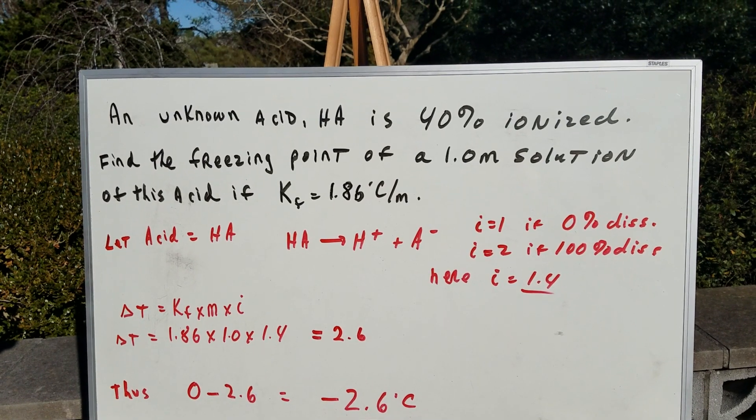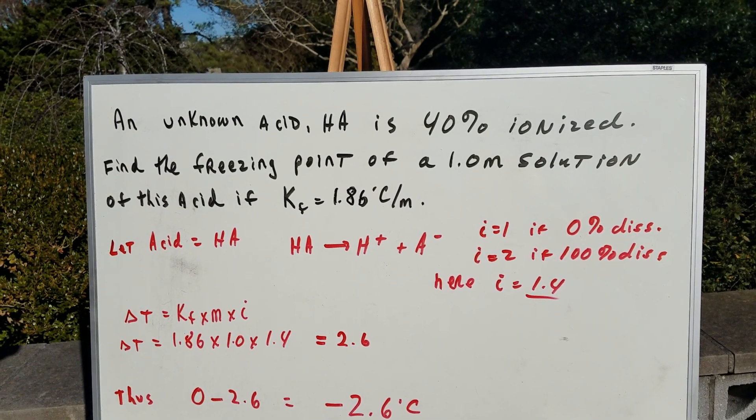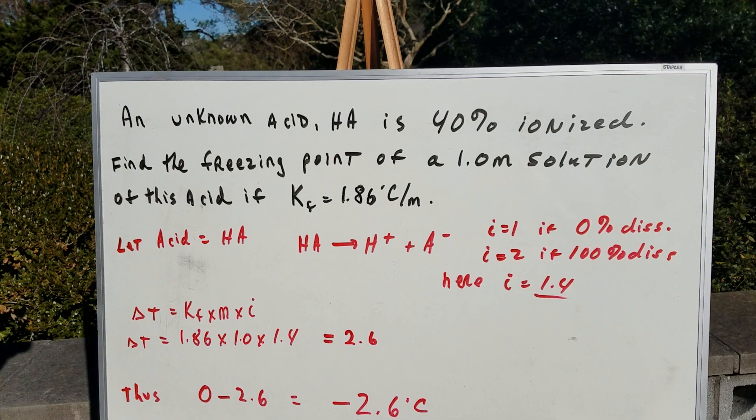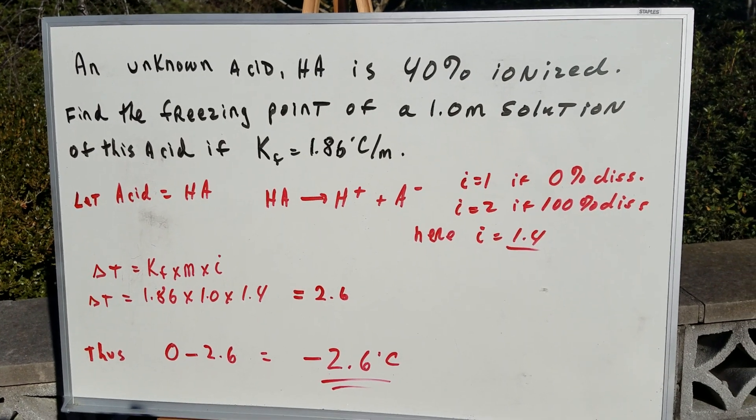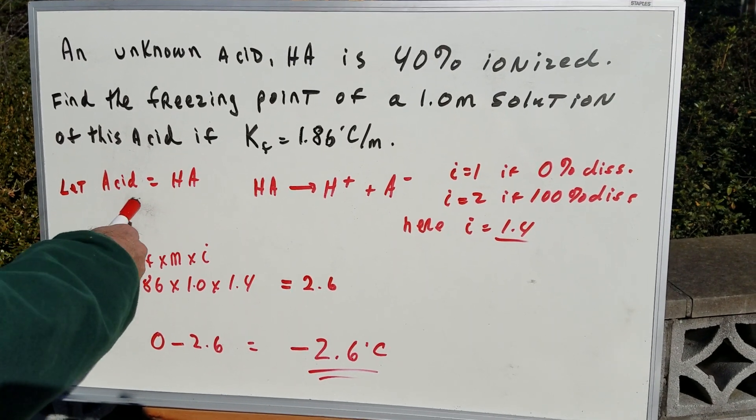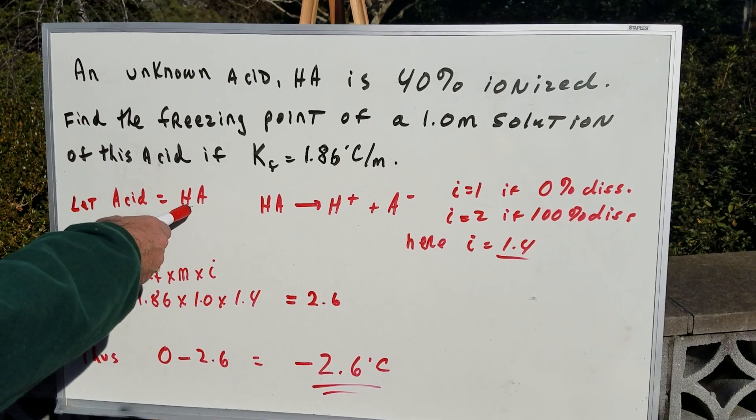So all we're going to do is find out what the change in the freezing point is, and then we're going to subtract it from zero because it's got to be below zero. The first approach is to simply let the acid equal HA.